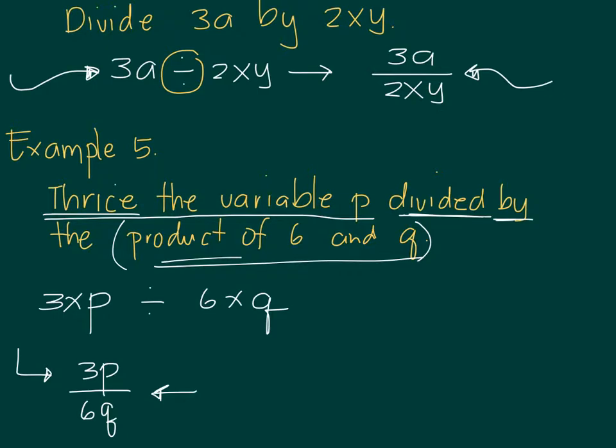When you understand a statement, you need to look at how the values are grouped, like the product of 6NQ, so that's 6Q, and thrice the variable P, so that's 3P. And then the main operation is division.